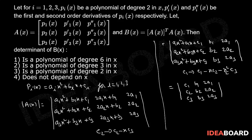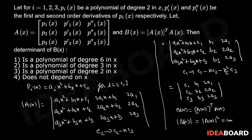By evaluating this determinant we get a constant value. Now B(x) = A(x)^T · A(x), therefore det(B(x)) = det(A(x))², which is a constant. Therefore the fourth option is the correct option.